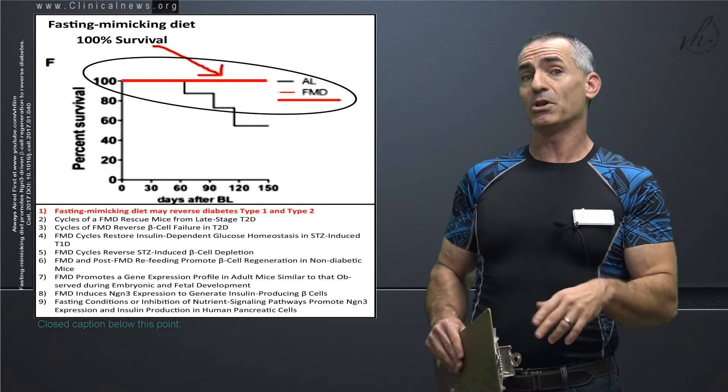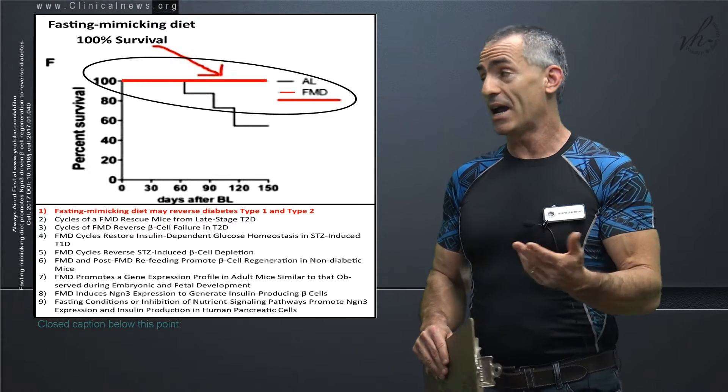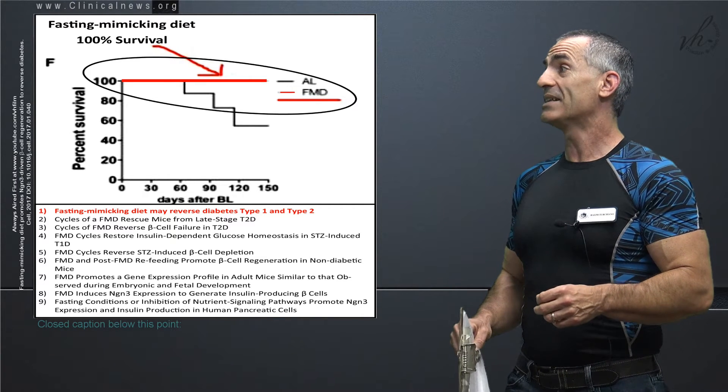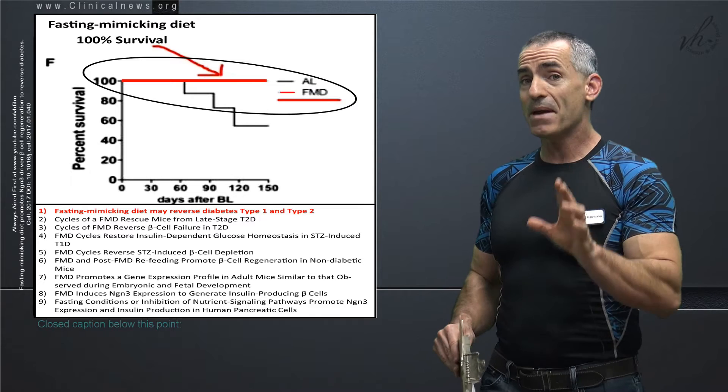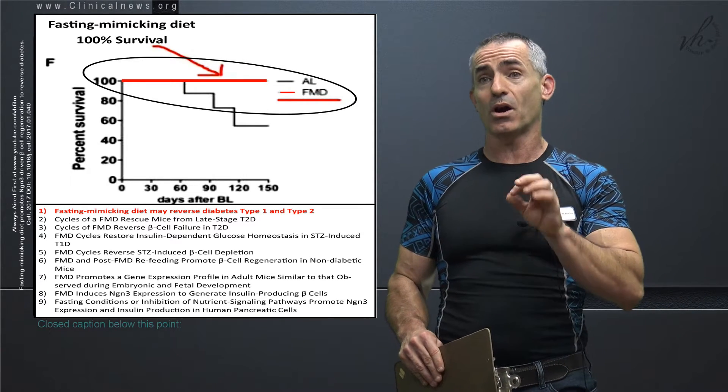Check the bullet points down below. Every time you see FMD, that means fasting mimicking diet. If you look at the top one right there, may reverse type 1 and type 2 diabetes. That's the amazing part.